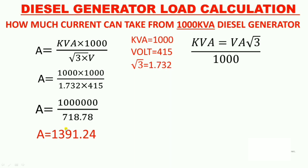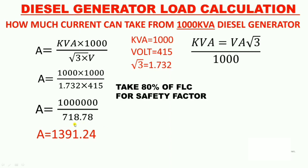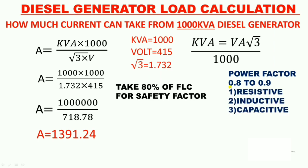1391 ampere is the full load current (FLC), but we cannot take 100% load of any electrical component due to the safety factor and other factors. Also, the diesel generator alternator is designed for 0.8 power factor, and we do not know which type of load will be connected — resistive, inductive, or capacitive. So we take 80% of the full load current as the safe working current.